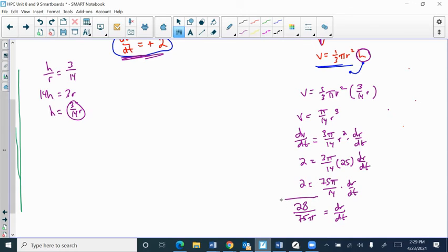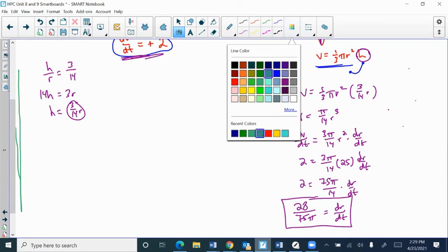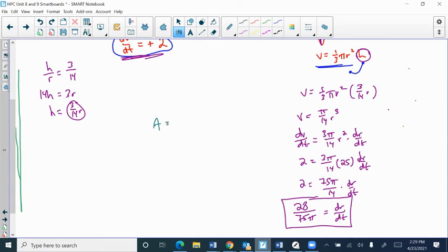I'm going to now take this rate that I found and go back. I had that circle equation, area of the exposed surface, which would be a circle, so that's pi r squared. So its rate dA/dt equals 2 pi r dr/dt. And I just found dr/dt.